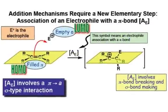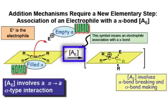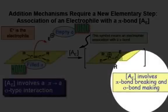But before we can begin to understand any of this, we must first introduce the new elementary step, A sub E. The way this reaction takes place is simple. An A sub E will always involve pi bond breaking and sigma bond making.